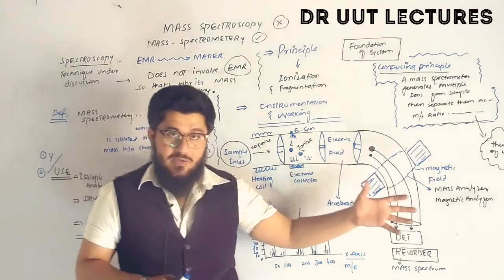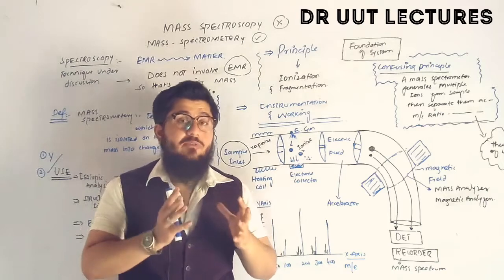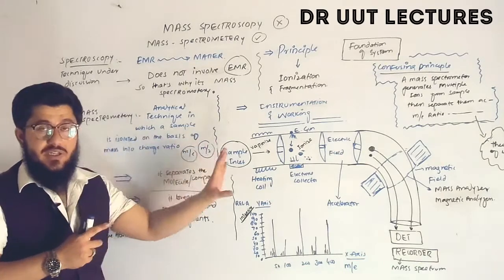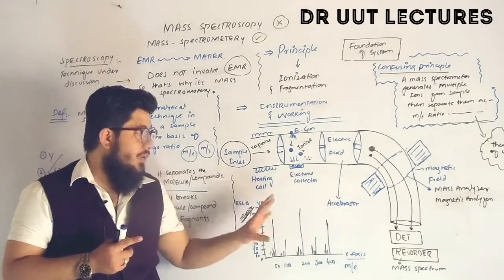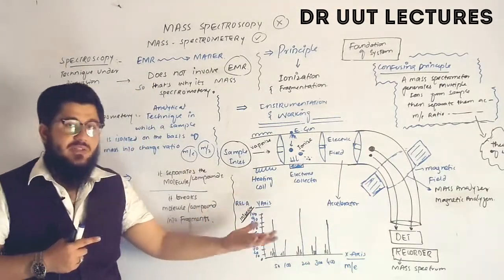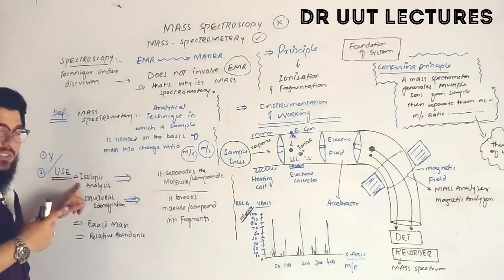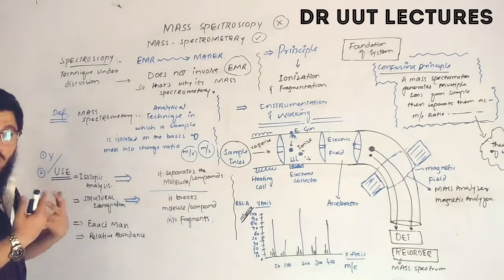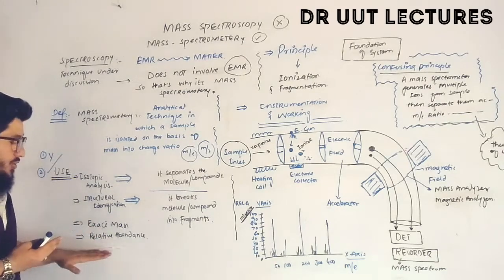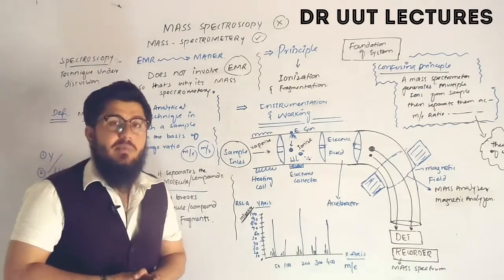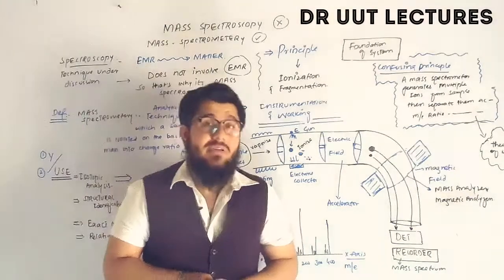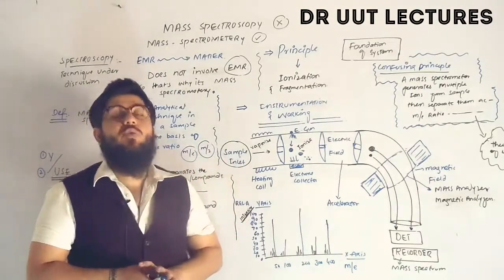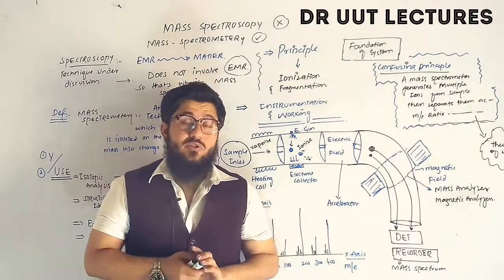We take this spectrum and compare it with already available spectra. After comparison, we can identify what kind of molecule was under investigation. Through this we can perform isotopic analysis, structure identification, determine exact mass, and know relative abundance. That covers mass spectrometry — not mass spectroscopy. If you have any questions, drop them in the comment box.